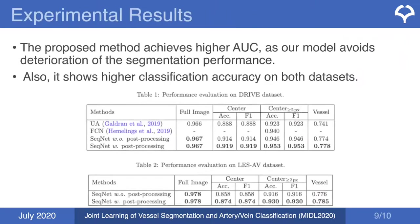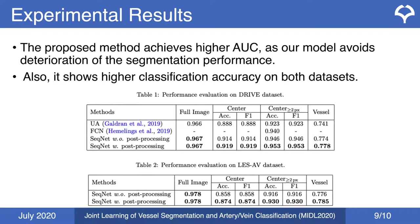We evaluate on two publicly available datasets — RITE and LES-AV — and achieve higher AUC than other methods, as our model avoids degradation of segmentation performance. It also shows higher classification accuracy on both datasets. Results of our SEQNET with post-processing show improvement over the version without post-processing.